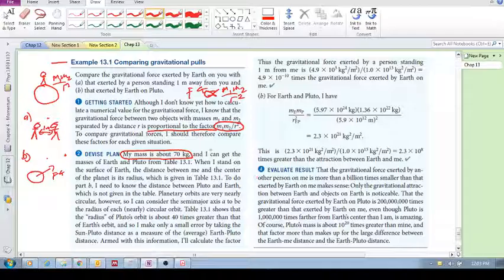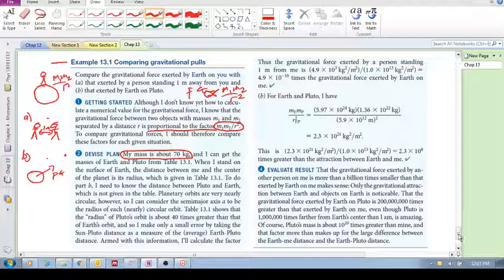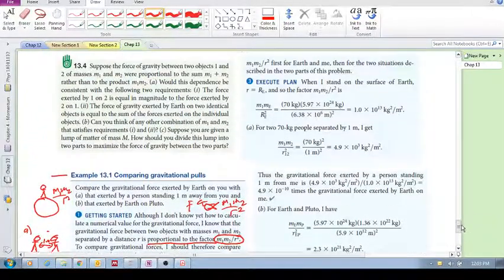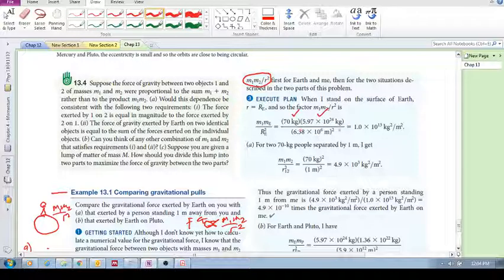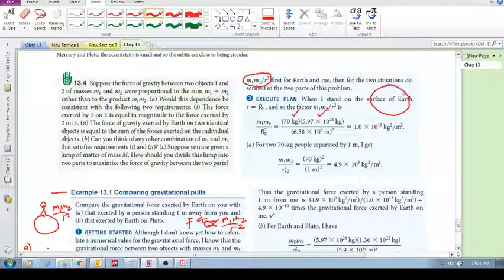Alright, so we start off with this, right? Between you and the Earth. So there's your mass, for example, there's the Earth's mass, and there is the radius. Remember when we're talking about using this inverse square law, the assumption is that all of the mass of the Earth is concentrated at its geometric center, or center of mass rather.